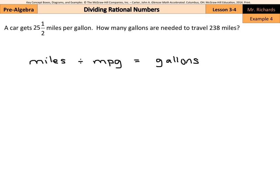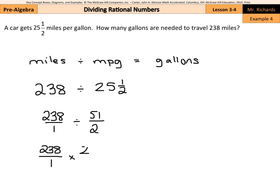So our miles 238 divided by the 25 and 1/2, 238/1 divided by 25 times 2 is 50 plus 1 is 51 over 2. And now if we multiply by the multiplicative inverse, you know, keep, change, flip, we get 238/1 multiplied by 2/51.